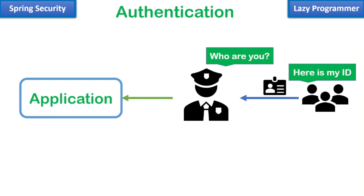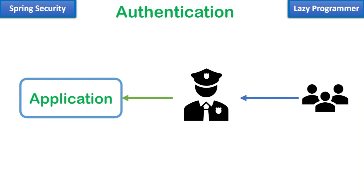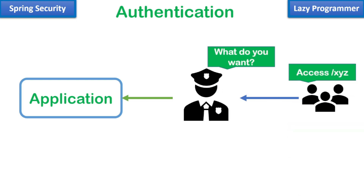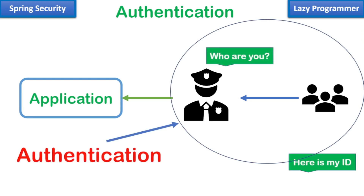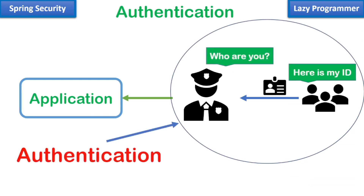Once that validation is done, the next question or validation check will be to see what do you want. In this, you will tell Spring Security that you want to access, let's say, XYZ resource. In this step, you do not have to provide any ID proof. So answering the first question — which was who are you — is known as authentication.